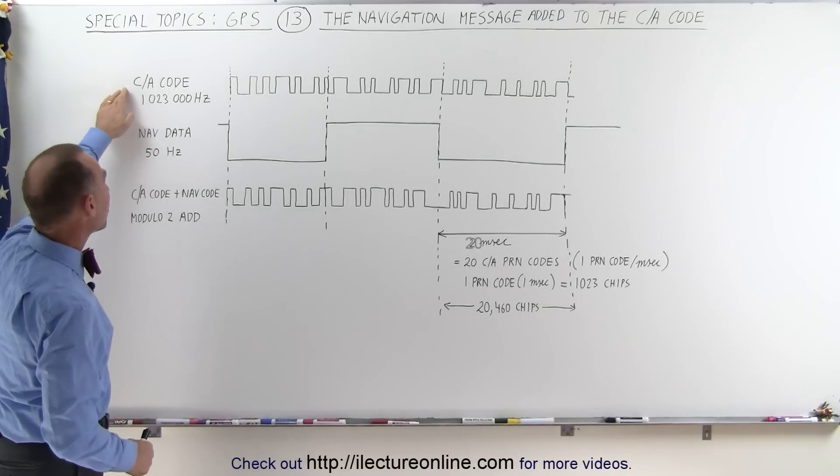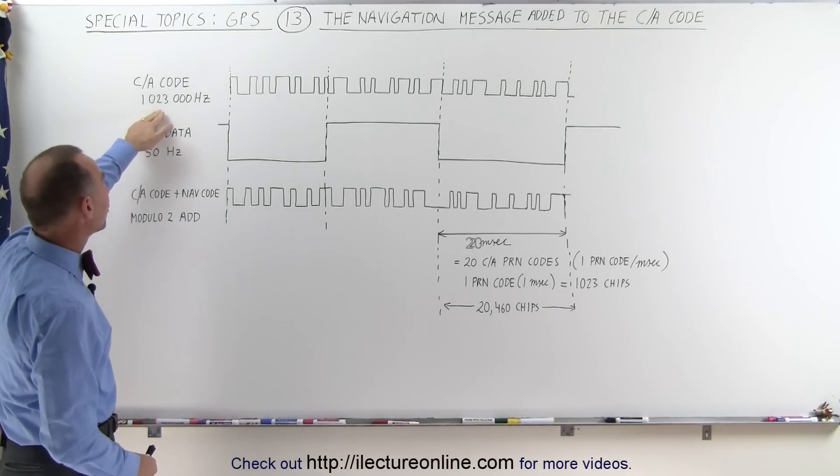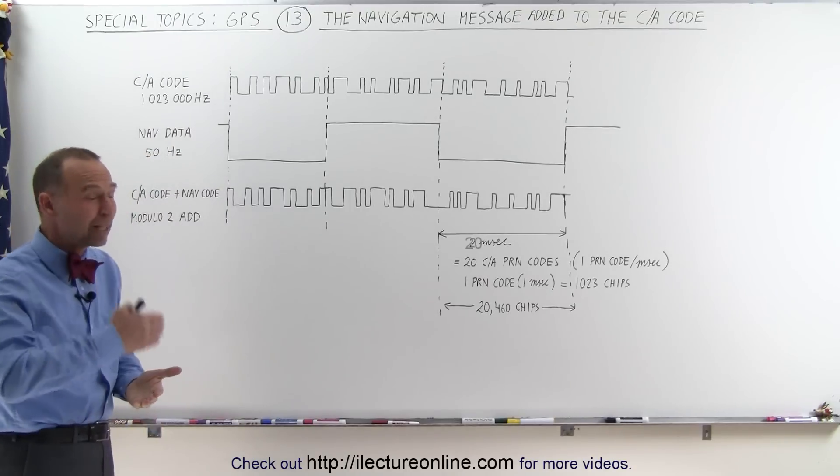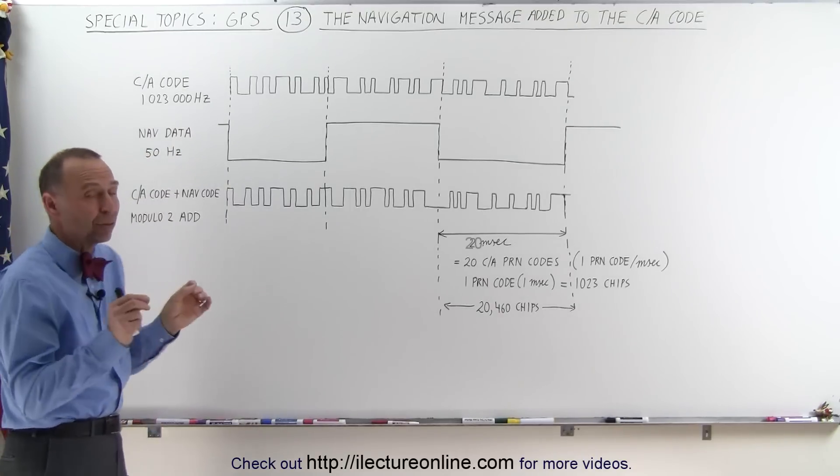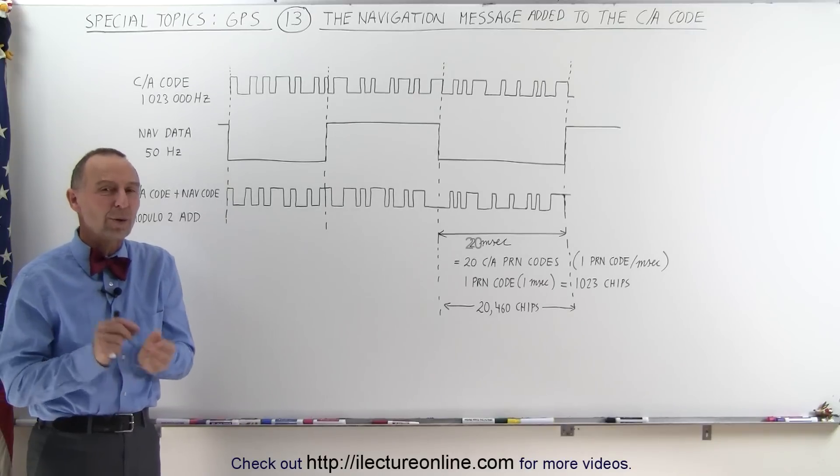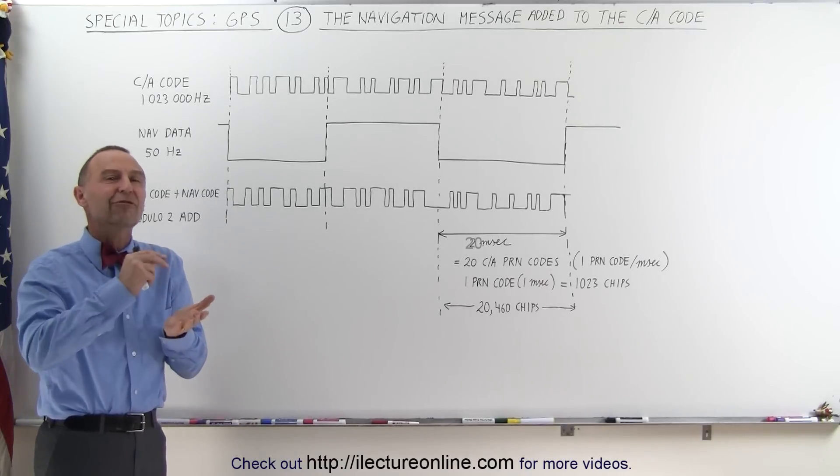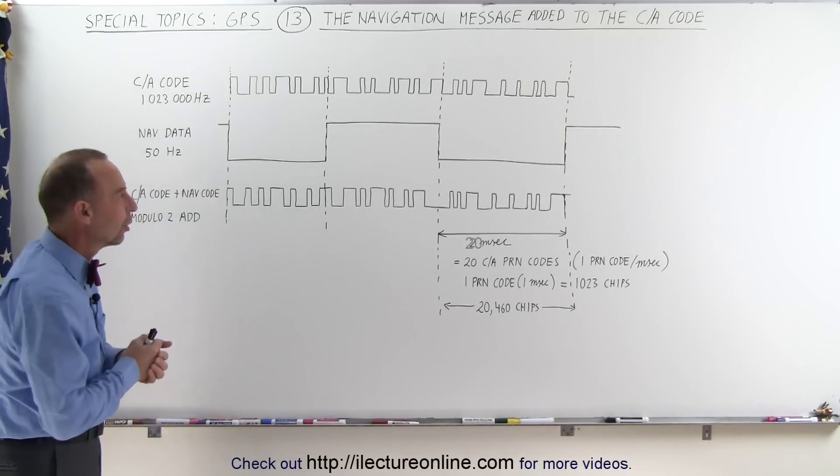Notice that the CA code data runs at 1.023 megahertz, which means 1,023,000 hertz. That means we have 1,023,000 bits, and actually we don't call them bits in the CA code, we call them chips because they really don't contain any data. They're just an identifying code that comes across with the signal.